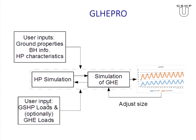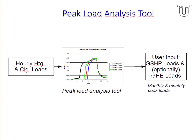An important rule: don't put loads in twice. Any load is either a load on the ground source heat pump or a load on the ground heat exchanger, but never both as inputs. If you put the load on the ground source heat pump, the simulation will figure out how much of it goes to the ground heat exchanger — so just don't input it twice.